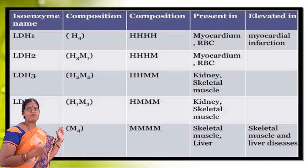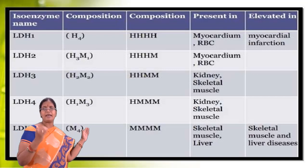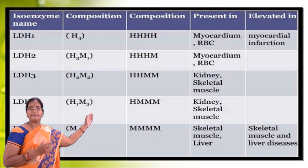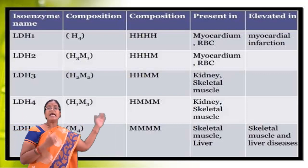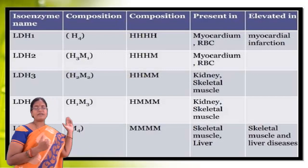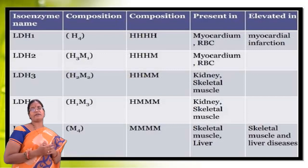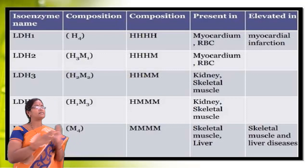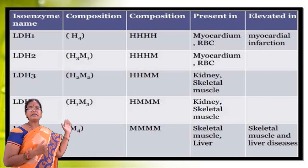LDH5 is composed of 4 muscle subunits, represented as M4 — the tetramer is totally specific for muscle. It mainly exists in skeletal muscles and liver, and LDH5 levels are elevated during skeletal muscle and liver diseases. If LDH5 values are raised in serum, it indicates the person is suffering from skeletal muscle disorders or liver diseases. If LDH1 values are increased beyond normal, it clearly indicates the person is suffering from myocardial infarction, that is, heart disease.